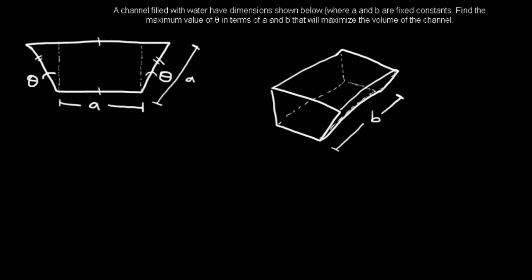All right, we're going to be taking a look at a common question in optimization that you might see in some sort of calculus one course. The question says: a channel filled with water has the dimensions shown below, where A and B are fixed constants.